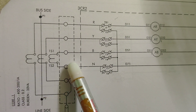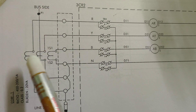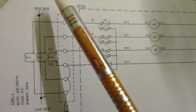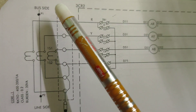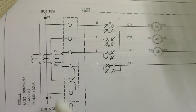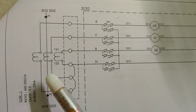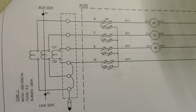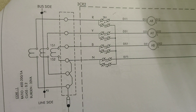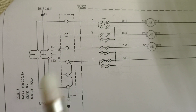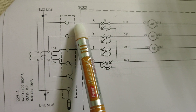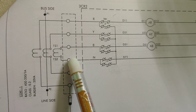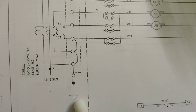Three-phase CTs are connected here: R phase, Y phase, and B phase. For simplicity, the Y phase CT P1 and P2 sides are shown — P1 is the bus side and P2 is the line side. The connections are in star configuration, and the S2 side of the CT is sorted and grounded.